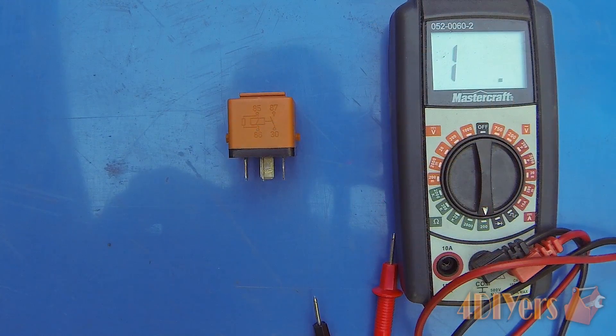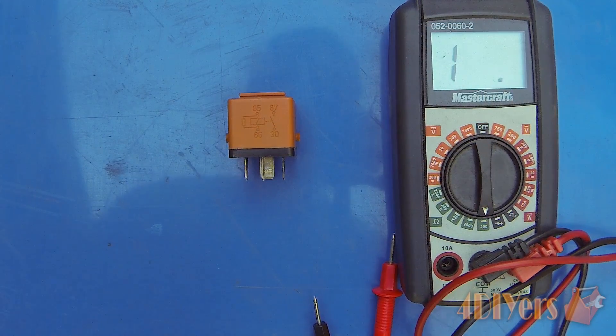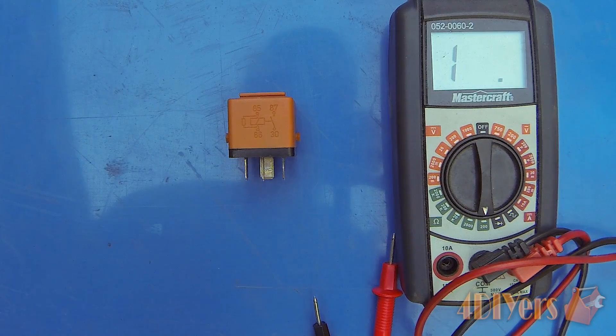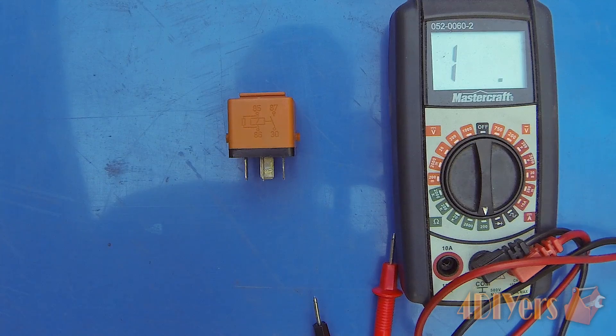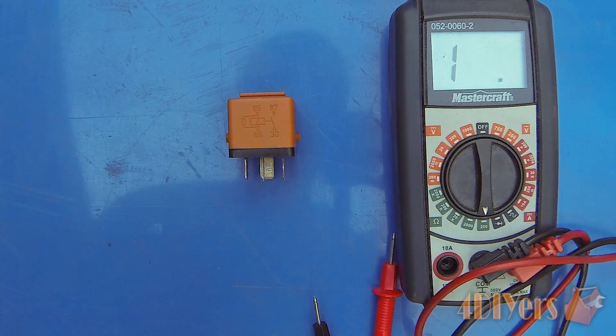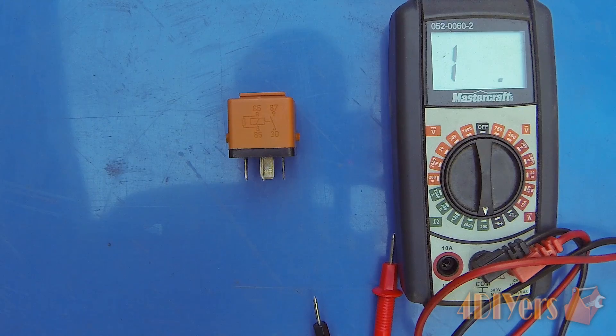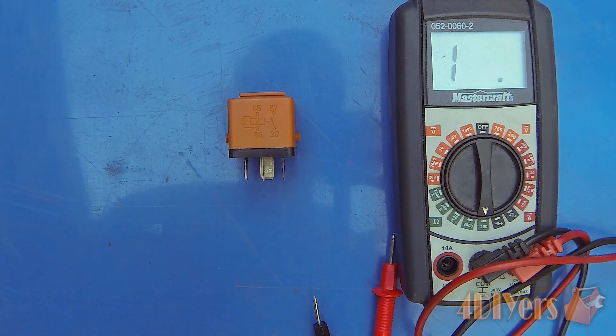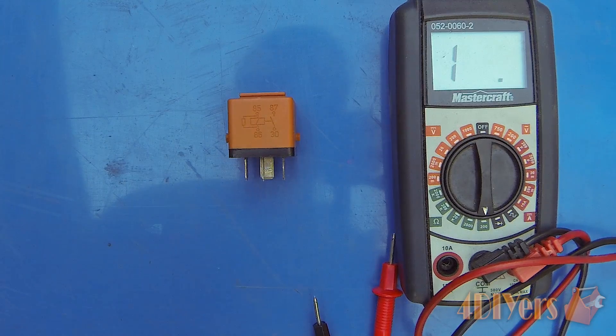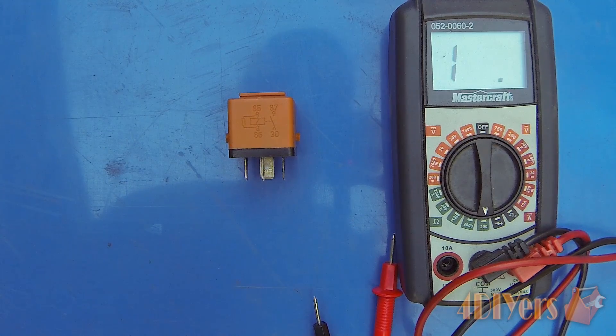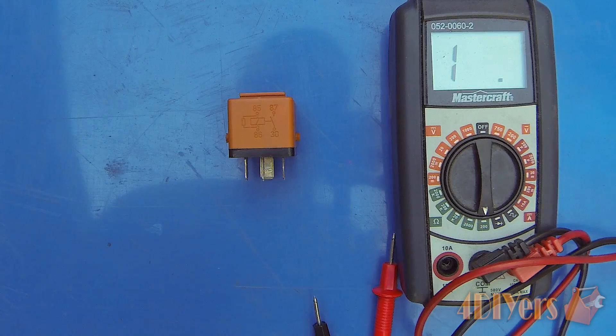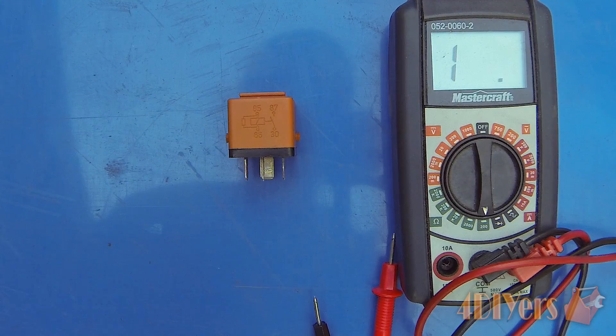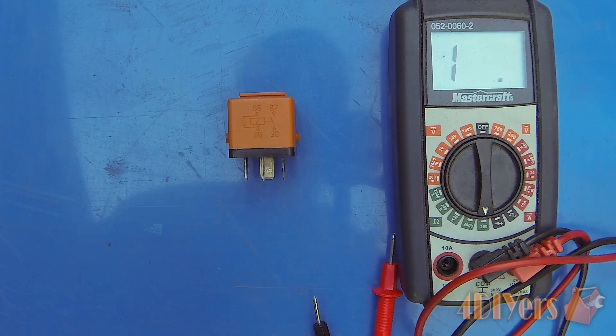For the switching portion, there are two different types: normally open and normally closed. This example is normally open. When the relay isn't powered up, the switching device is normally open, so there's no power going to the circuit it controls. With a normally closed circuit, there's always power, but when the coil is powered up, it opens the circuit, cutting power.